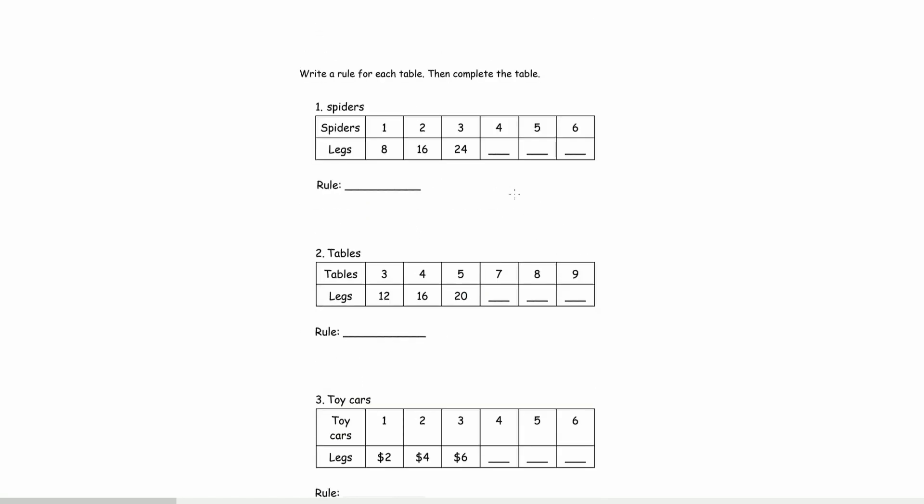Write a rule for each table, then complete the table. So here we have 1, 2, 3, 4, 5, 6. That's the spiders. And legs, we go from 8 to 16 to 24. From 8 to 16, it goes up by 8. Or it's doubled.